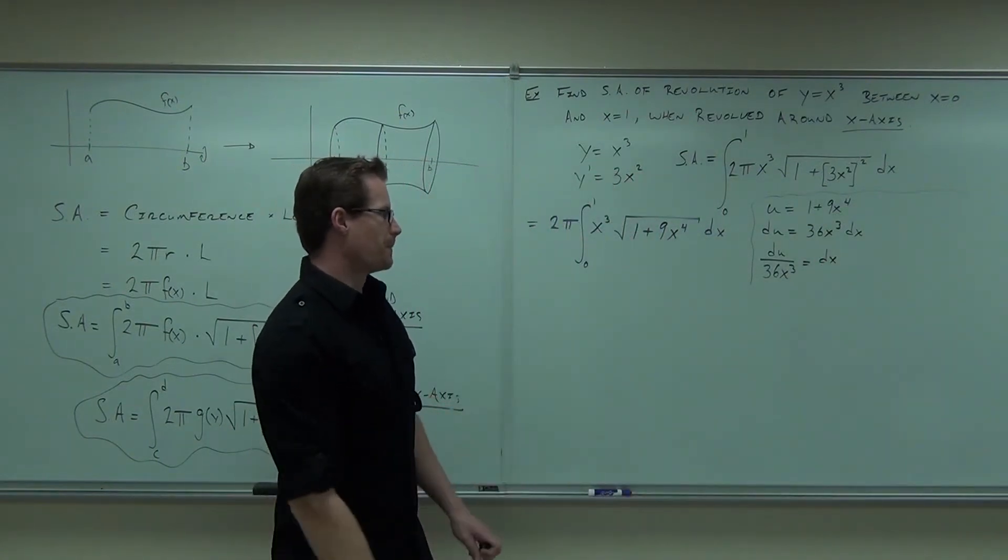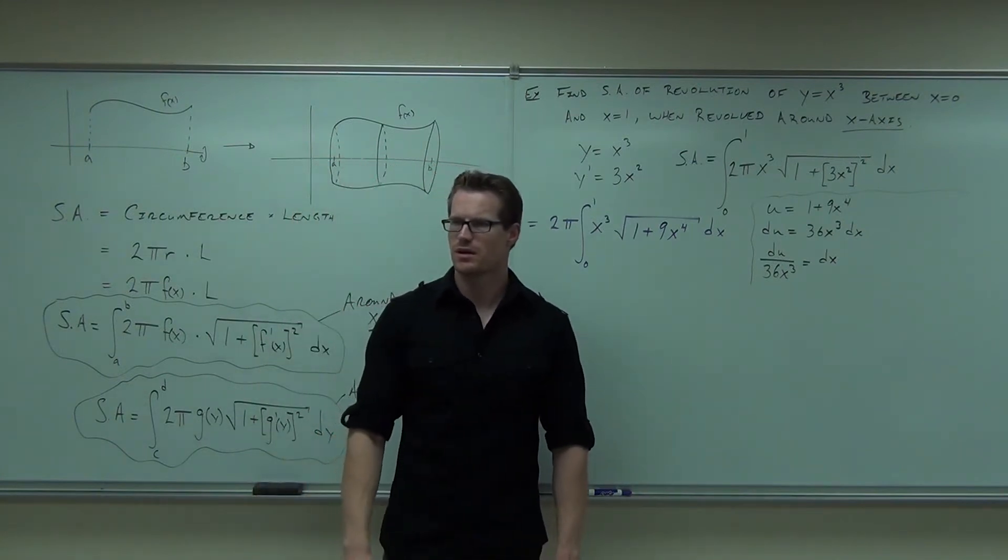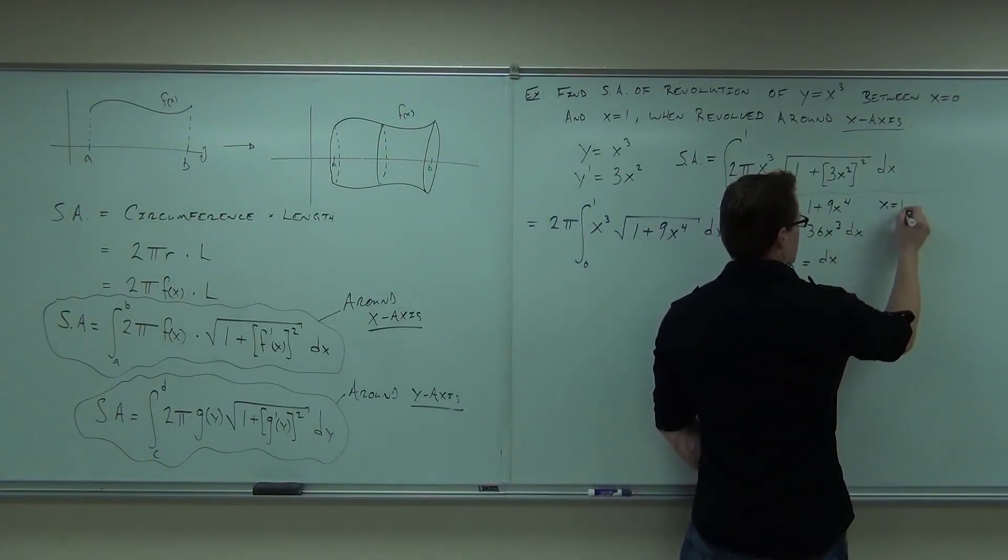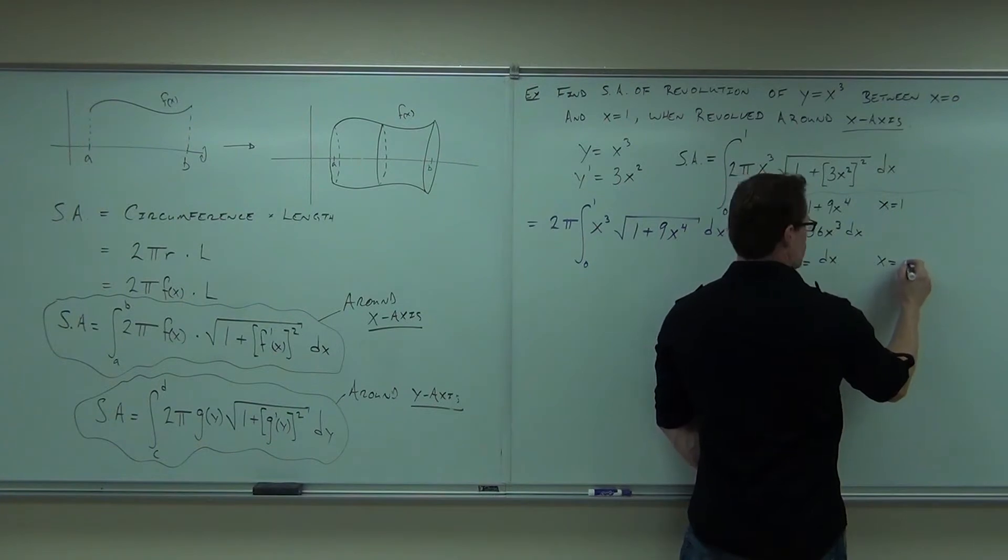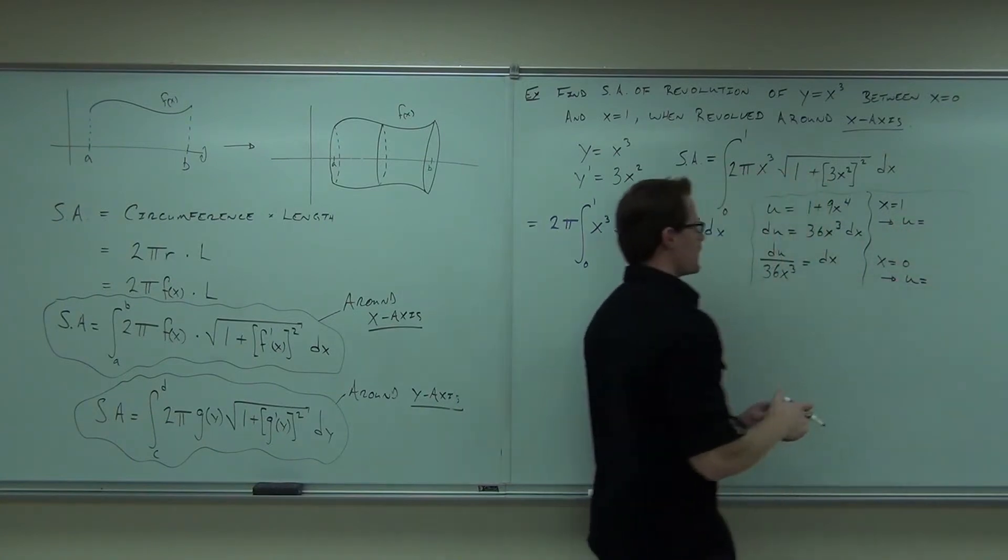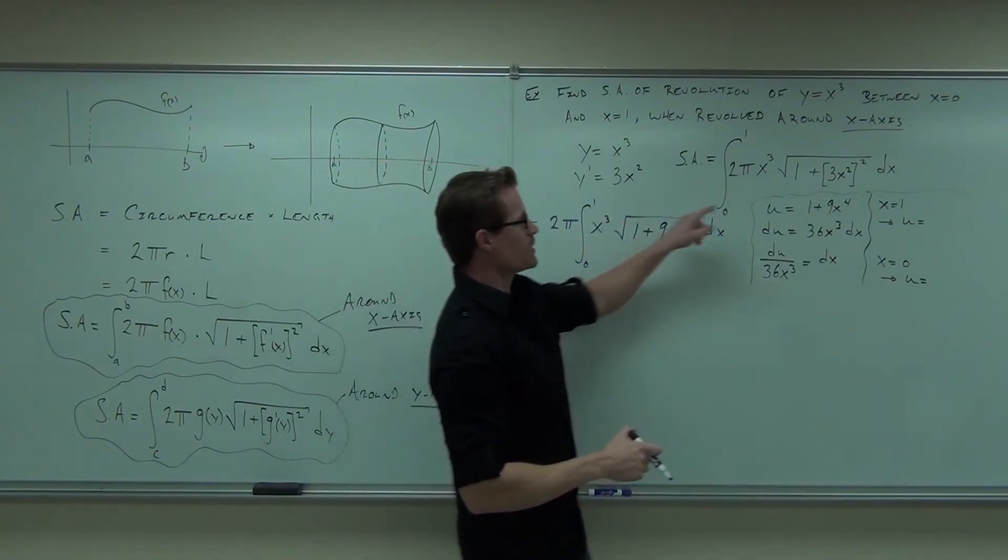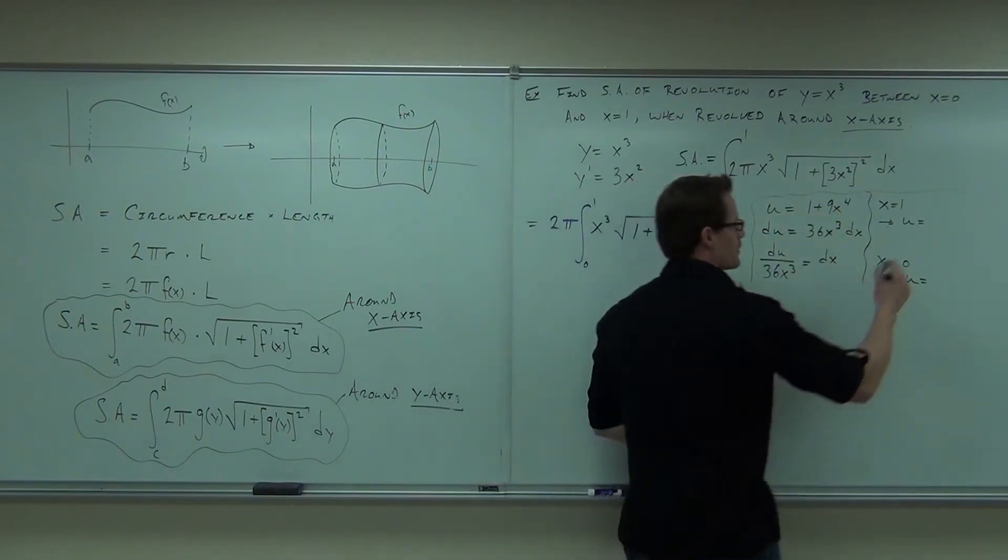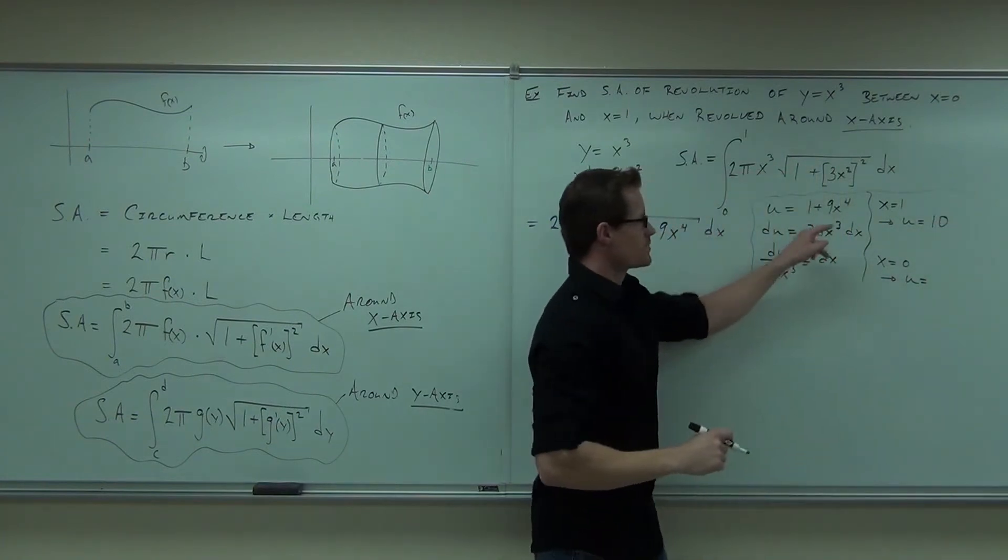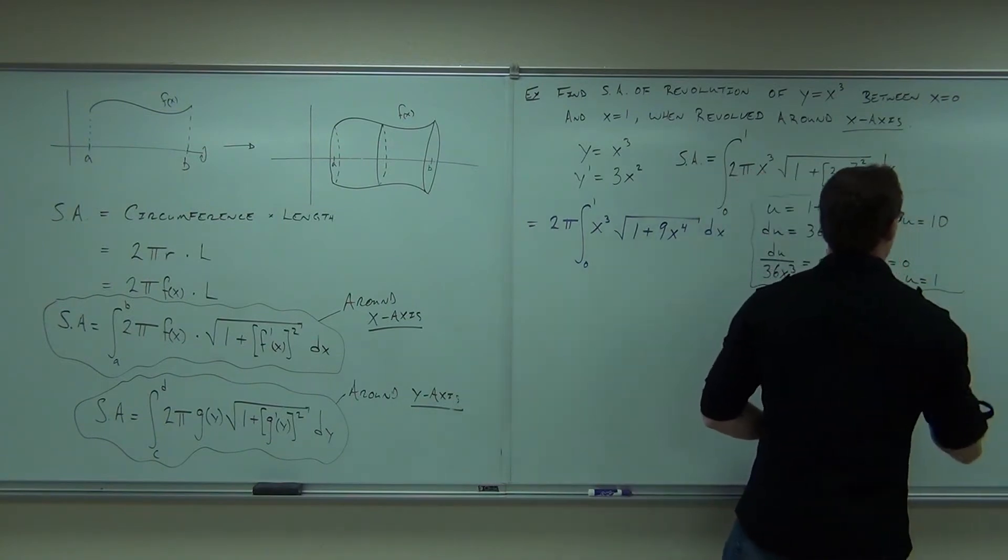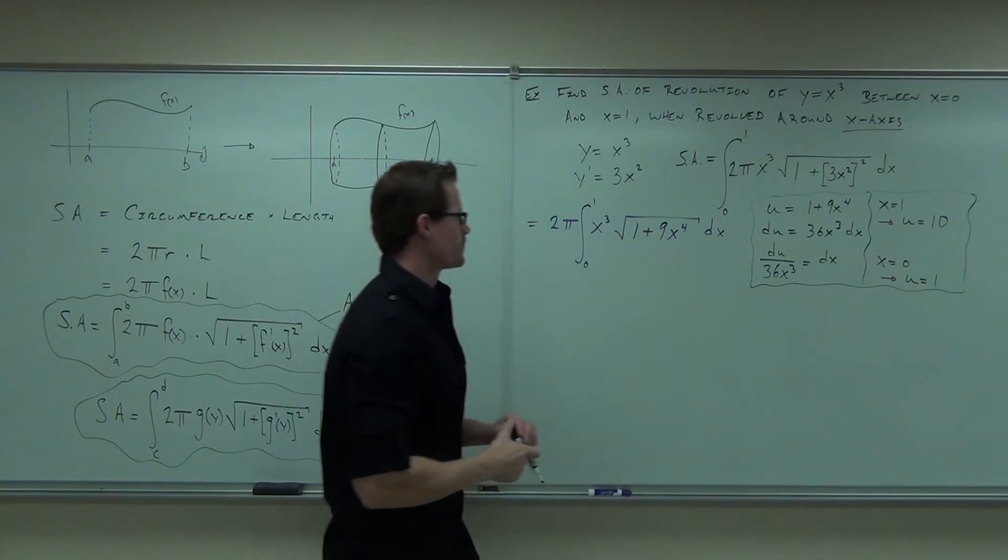What else might you want to do? Do you guys like change in bounds? I like change in bounds, too. It makes it easier later on. So let's take our x equals 1 and our x equals 0. Let's change those bounds. If x equals 1 and u is 1 plus 9x to the 4th, how much is u going to be? 10. Perfect. Not too bad. If x equals 0, how much is u going to be? 1. Not bad either.